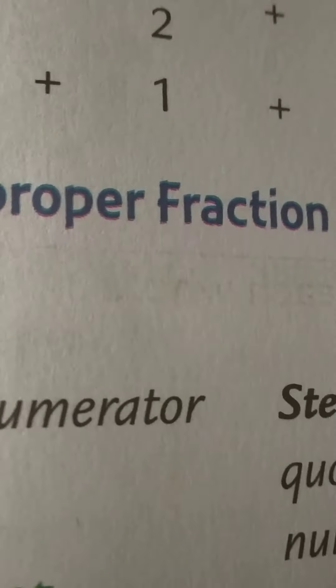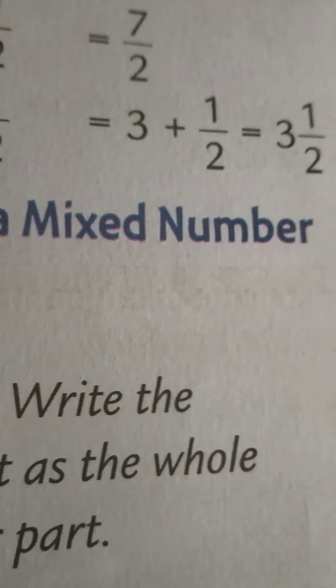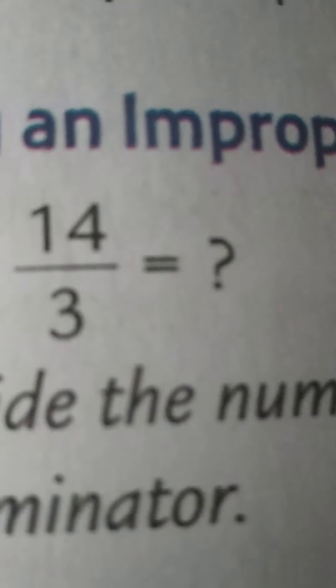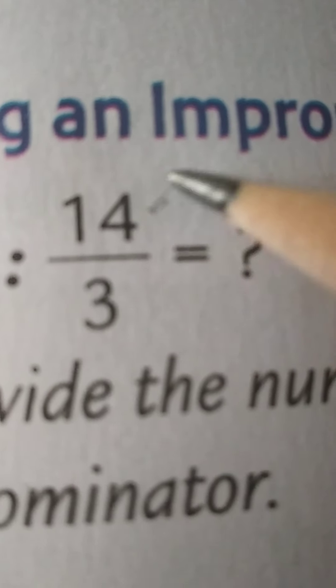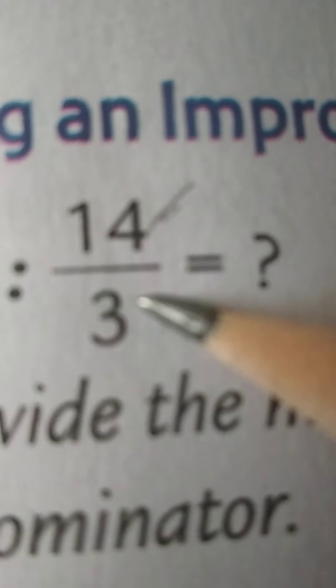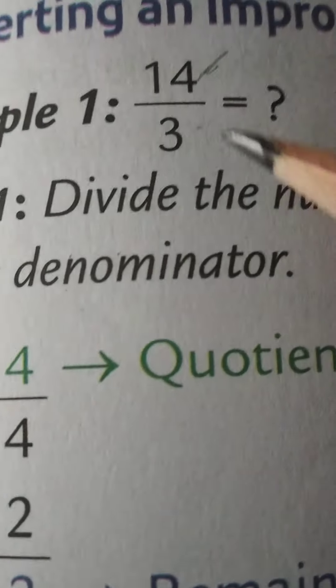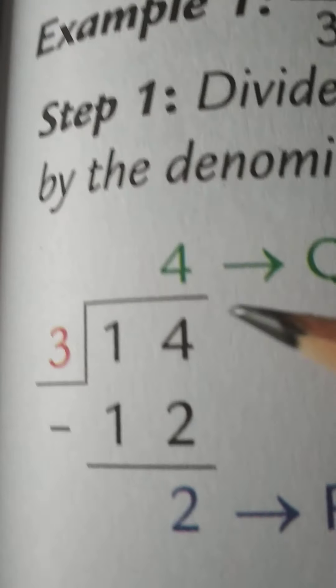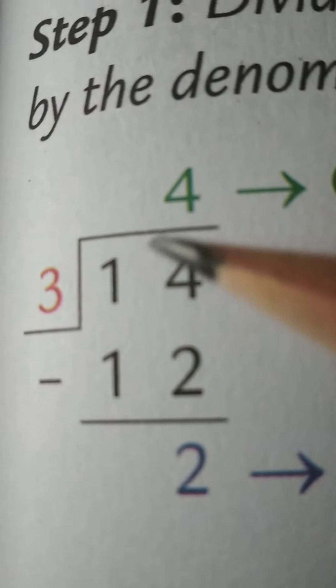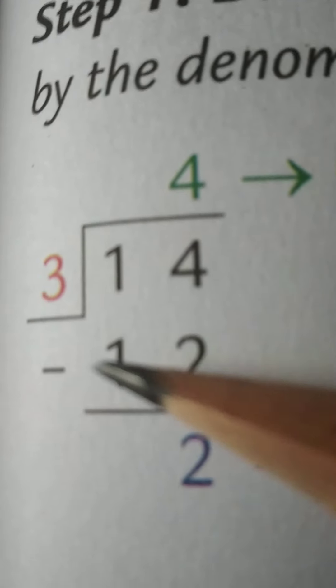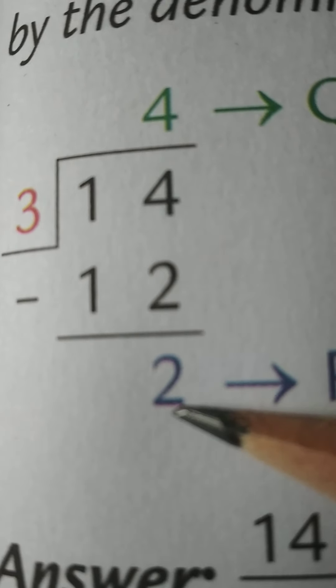Once you have done that, let's see how we can convert, just means change, an improper fraction into a mixed number. Let's take a look at this. It is an improper fraction because the numerator is larger than the denominator. How would we do this? Step 1, divide the numerator by the denominator. Divide 14 by 3. Here it is. 3 does not go into 1. 3 fours are 12. We have 2 as a remainder.